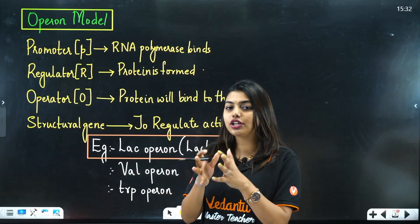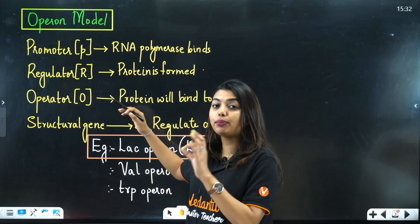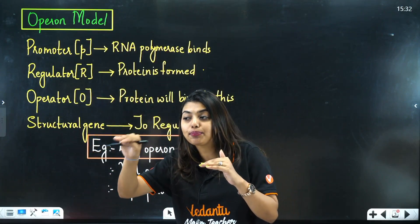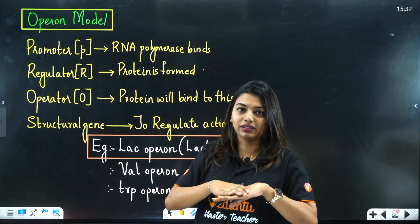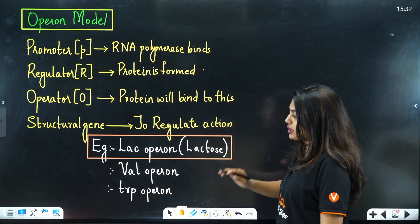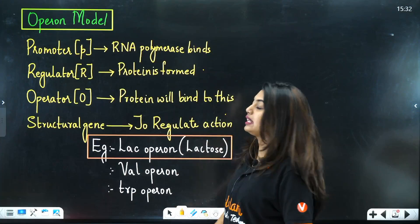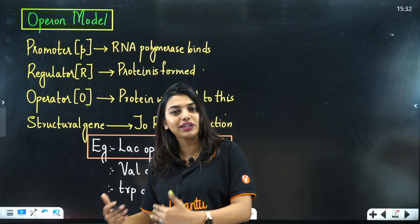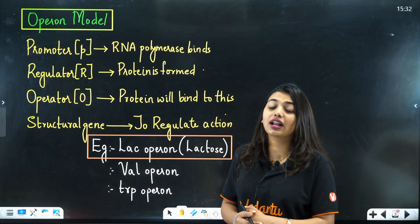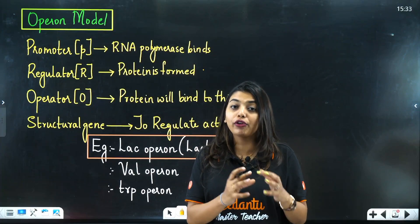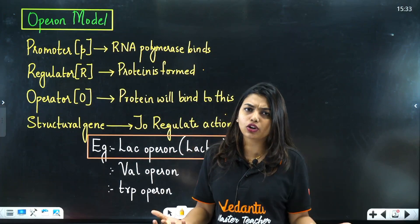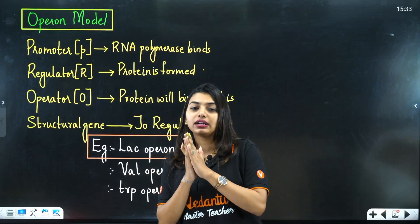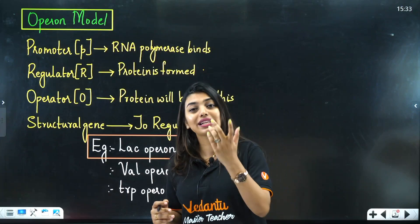The regulator forms a protein called the repressor protein. This repressor protein then goes and binds with the operator. The structural genes perform different functions, which we'll learn further. While there are many operons like valine operon and trp operon, luckily for NEET you only need to study lac operon.